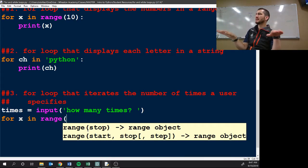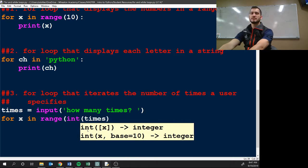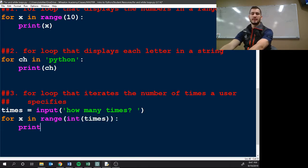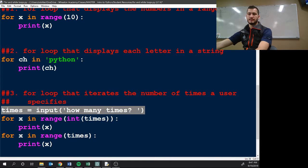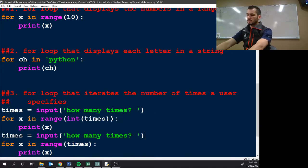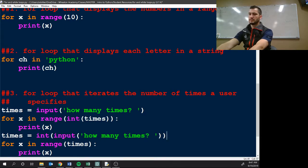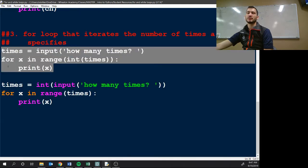So, I can either make this an integer here and do times, and then print x, or I can do for x in range times print x and have it like this. So, either way, these two would be correct.